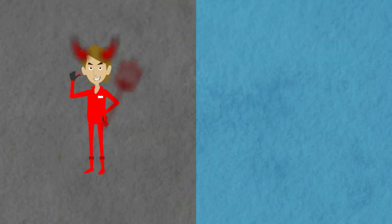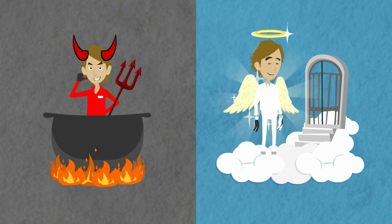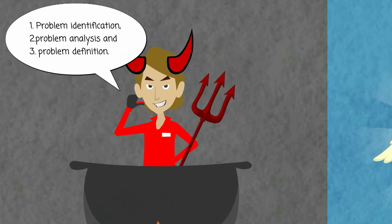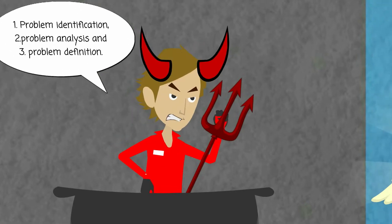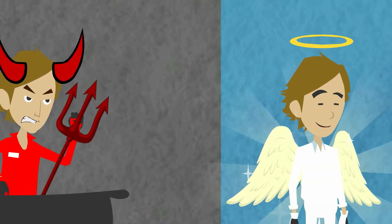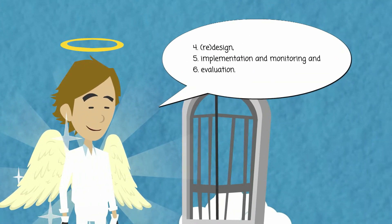The intervention cycle consists of two parts: the problem and the solution. And this consists of six stages. On one side: problem identification, problem analysis, and problem definition. And on the other side: redesign, implementation and monitoring, and evaluation.